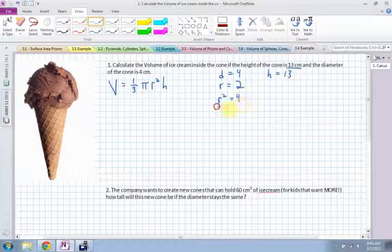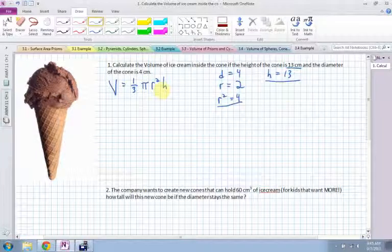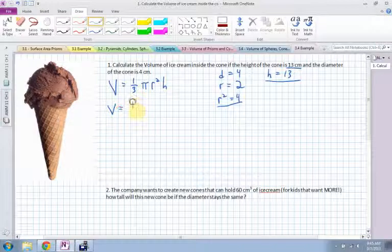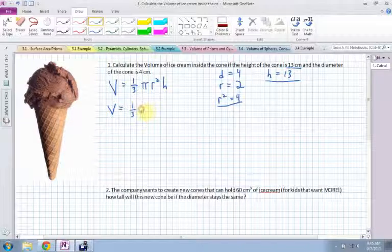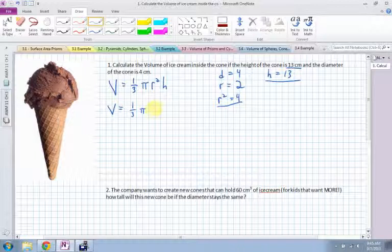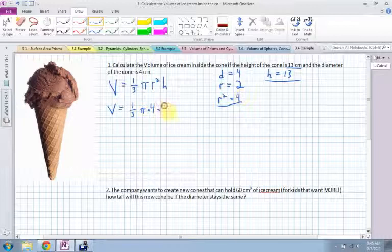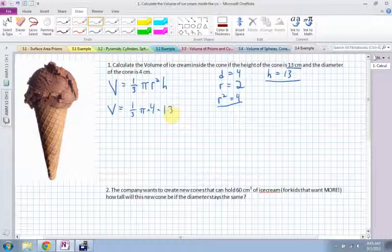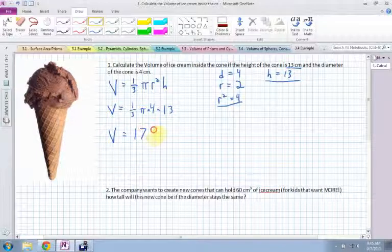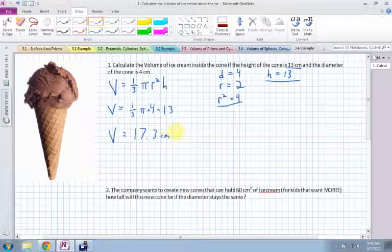Now I have the radius squared and I have the height. So I can fill in that information in my little equation here. So volume is equal to one-third times pi times the radius squared, which is 4, times the height, which is 13. Now it's just a matter of multiplying straight through. If you use a calculator, you get one-third times pi times 4 times 13 should get 17.3, and the units are centimeters cubed.